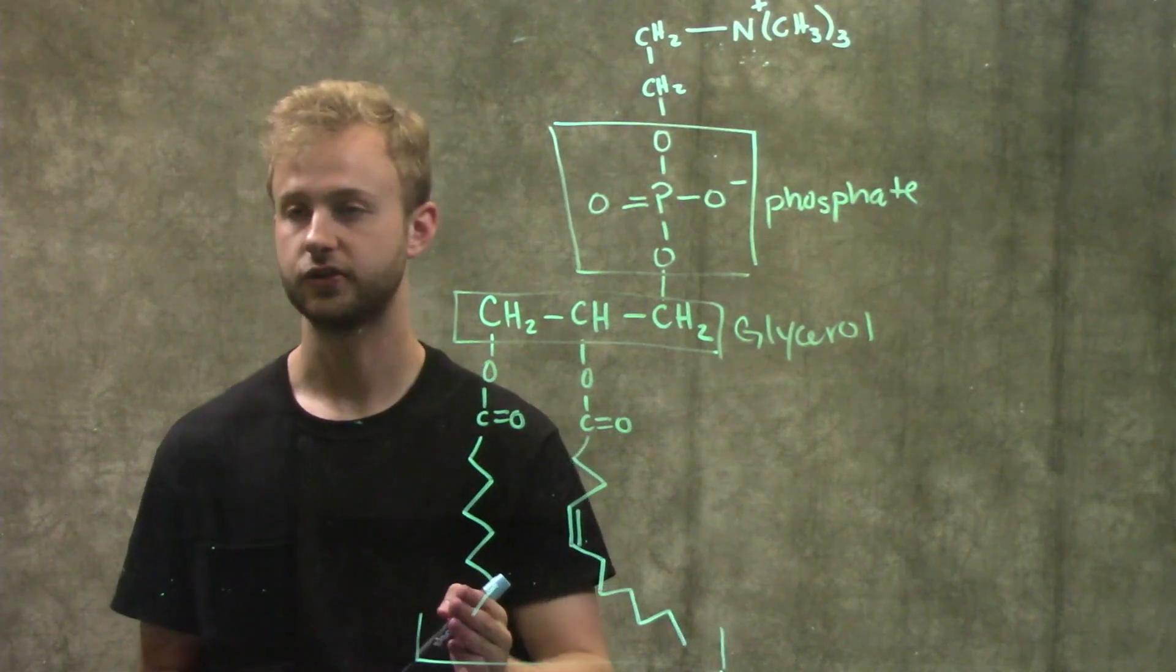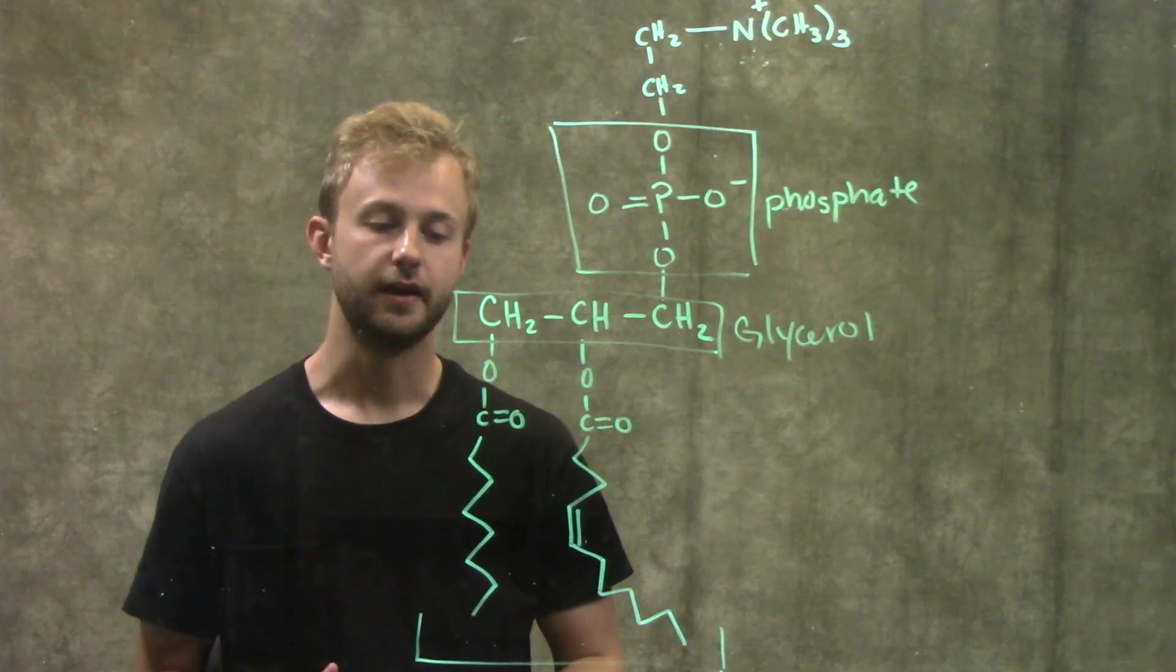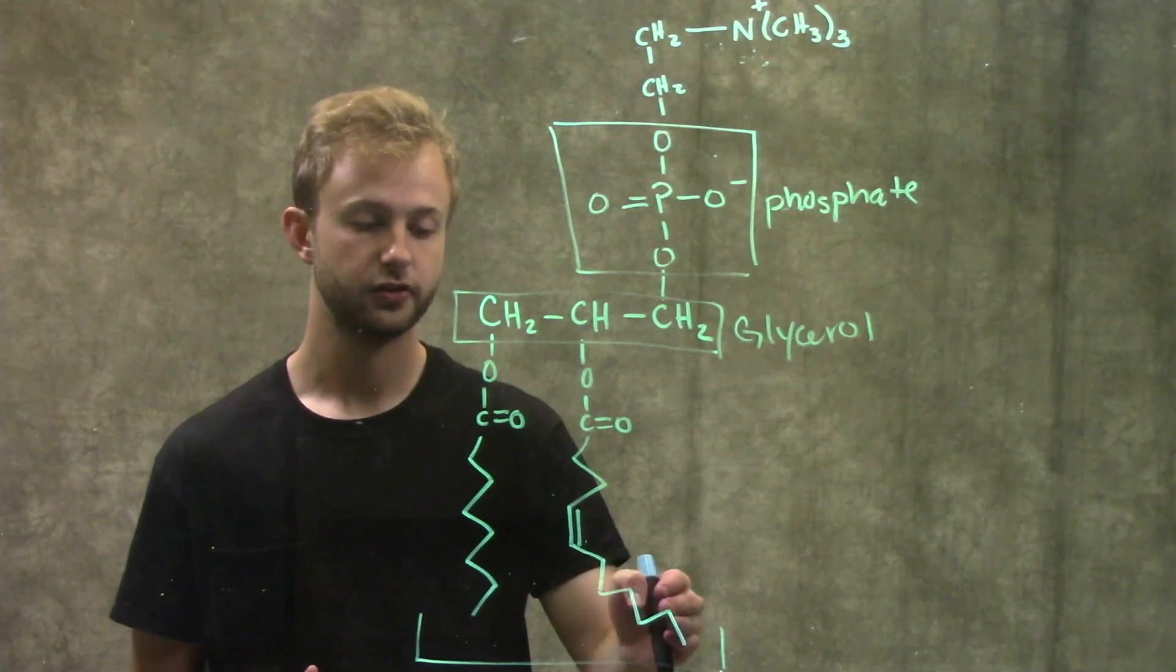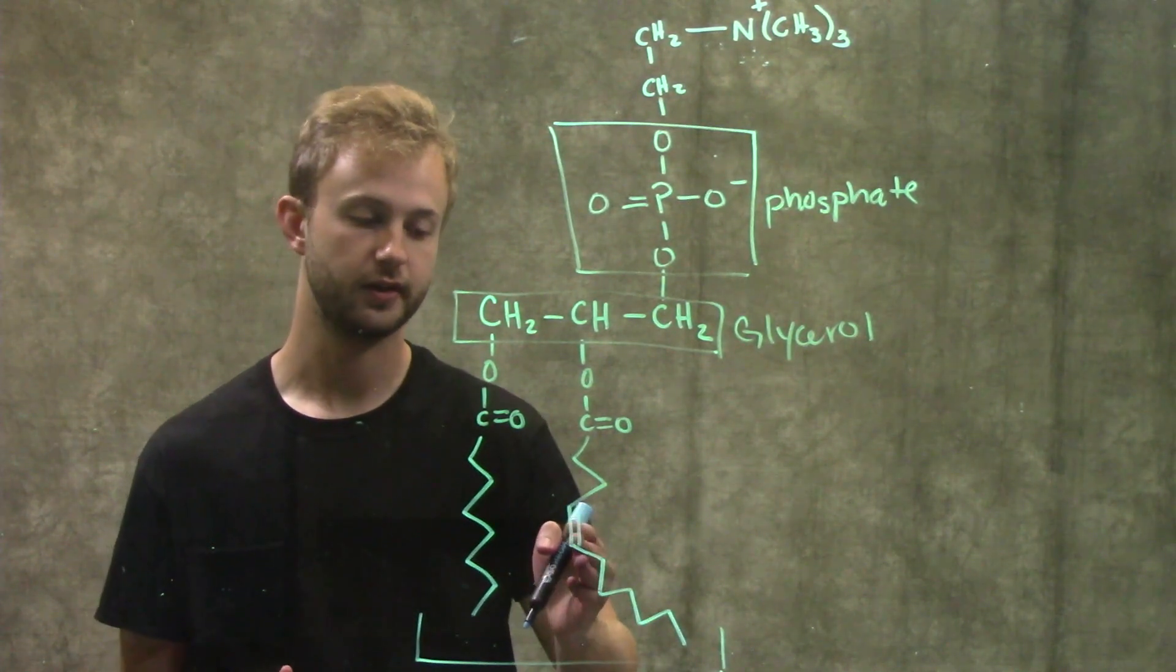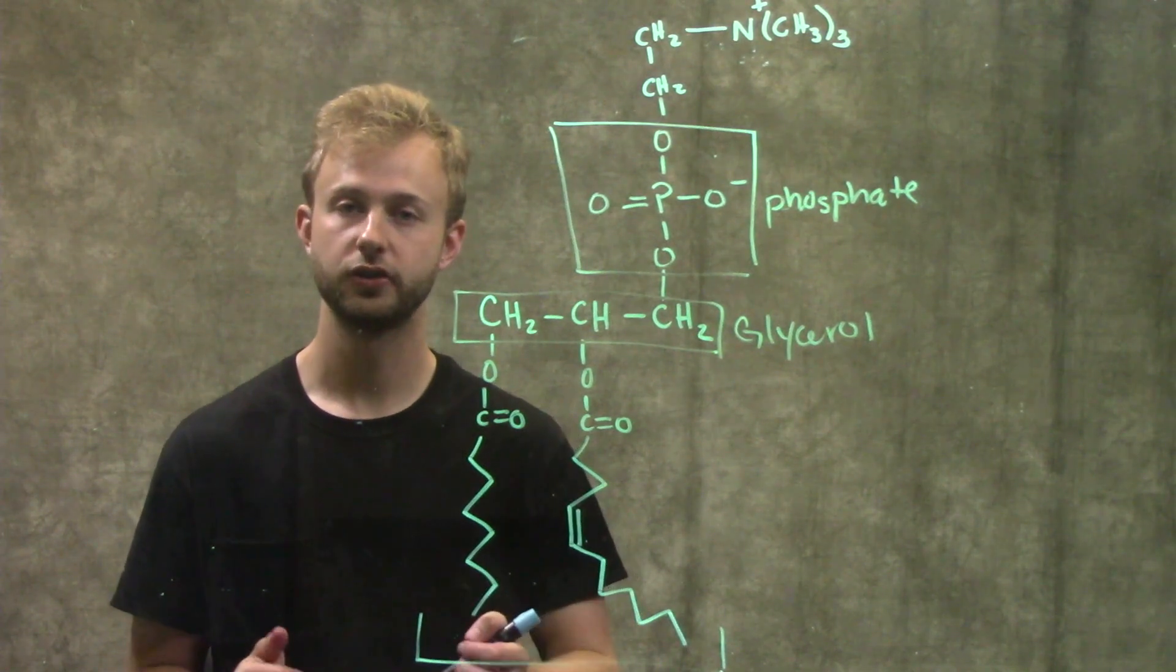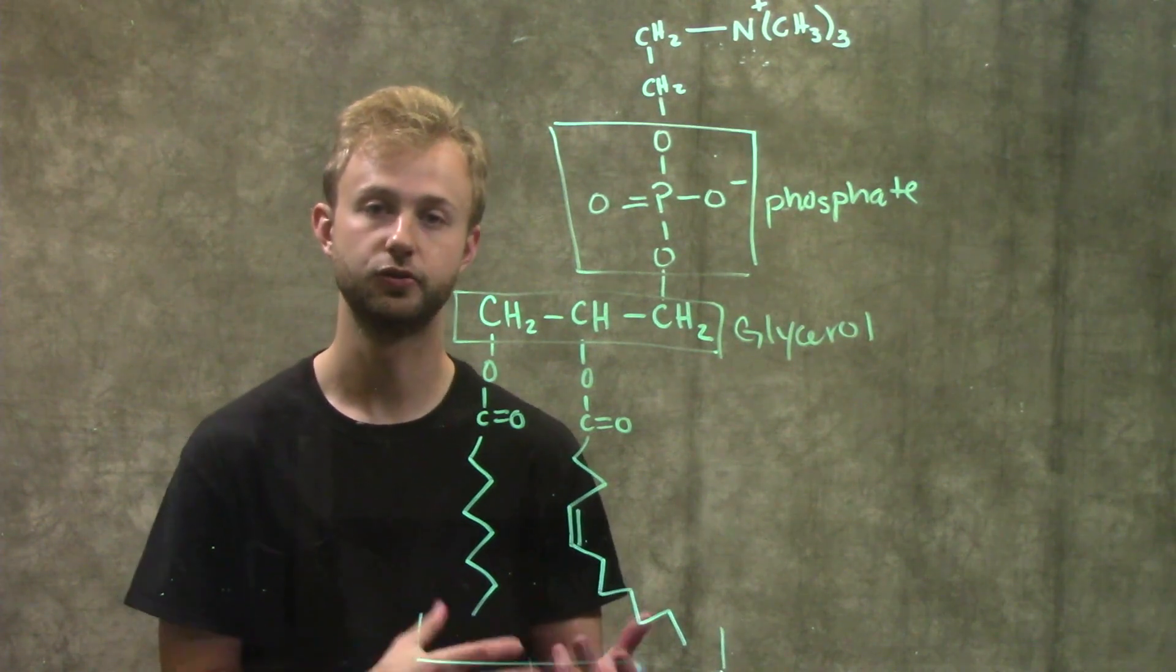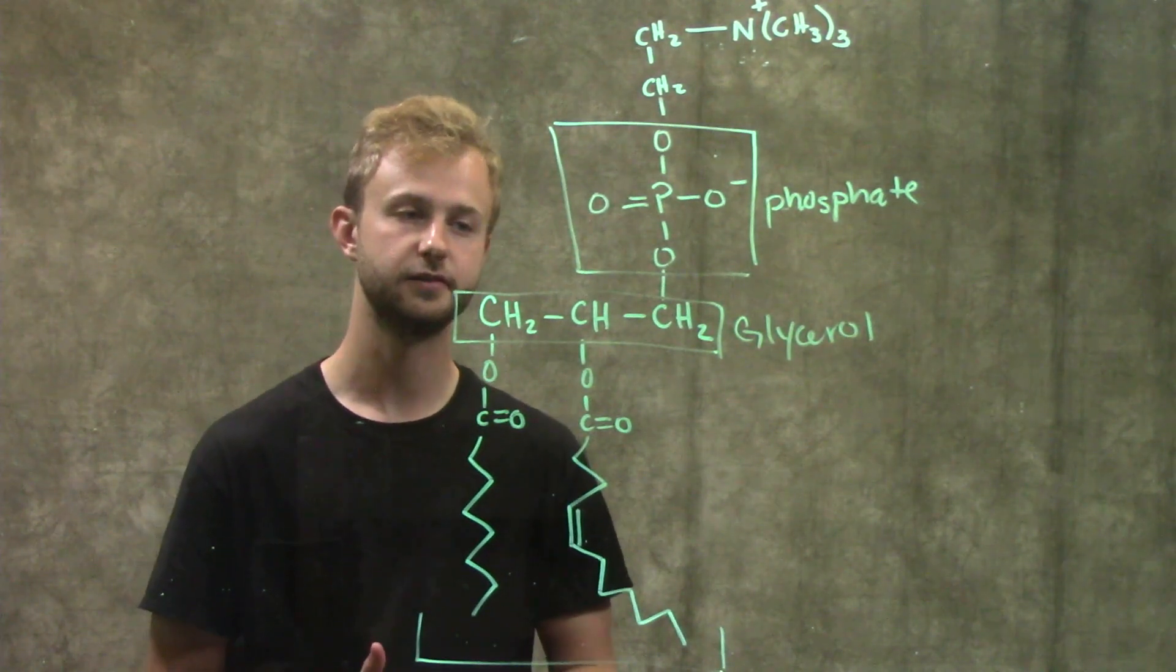So this one right here would be saturated and then this fatty acid right here would be an unsaturated fatty acid. Something important about unsaturated fatty acids is this unsaturated fatty acid is going to have a kind of kink in its structure, a bend, because of the presence of this cis double bond and that's going to be true for all unsaturated fatty acids.